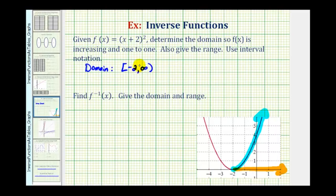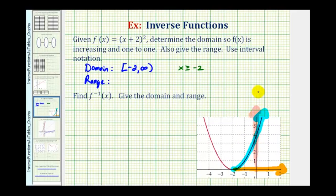We could also express this using inequalities as x is greater than or equal to negative two. Now let's consider the range. The range is the set of all possible y values or outputs of this function on the restricted domain. If we project this graph onto the y-axis, the smallest y value would be zero and from there it increases upward toward positive infinity. So the range would be the interval from zero to infinity, closed on zero, or we could say y is greater than or equal to zero.